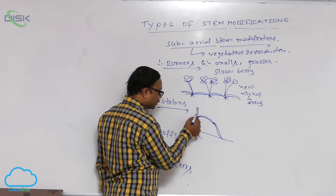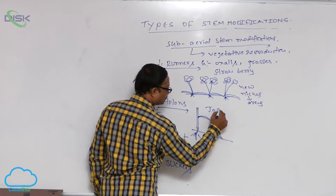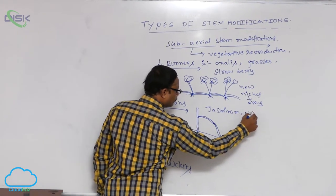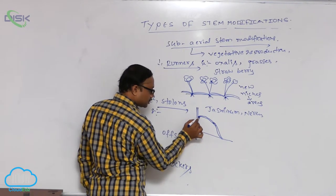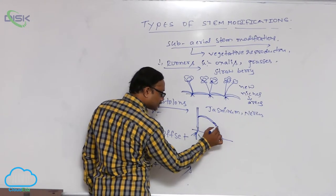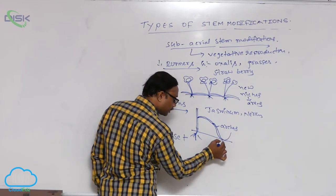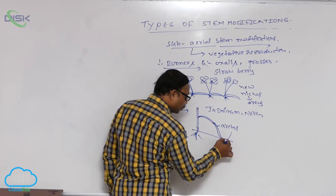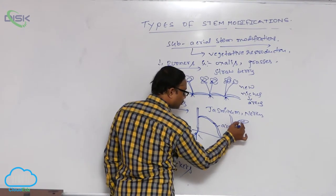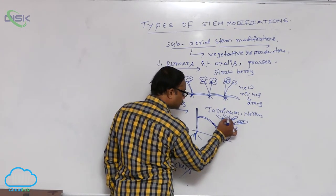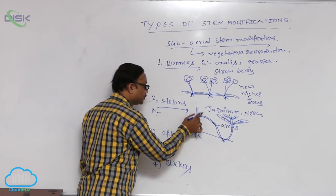An example of stolons is Jasminum. In Jasminum, at the lower part of the stem, branches are produced. These branches sometimes grow in the air, then arch down and touch the soil, producing adventitious roots. The branches then grow obliquely upward, producing leafy shoots. These leafy shoots are known as stolons. Jasminum and Nerium are examples that participate in vegetative reproduction through stolons.